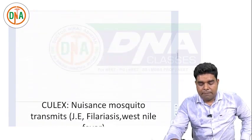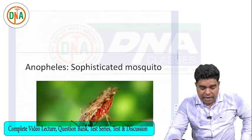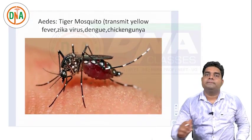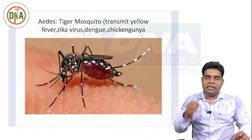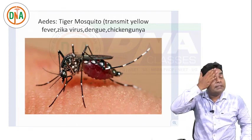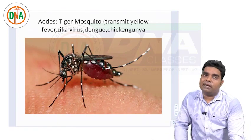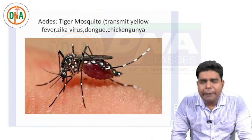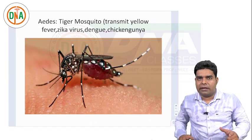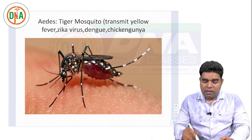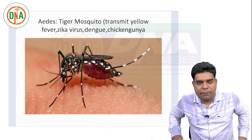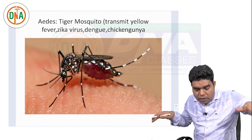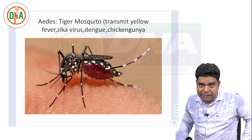Next are some mosquito images. I would like to start the discussion with Aedes, because it is most easily identifiable. Aedes is known as the Tiger Mosquito because it has black and white stripes over the body and legs. Remember, the wing of Aedes does not have any stripes or spots — they are only present on the body and legs, not on the wing.